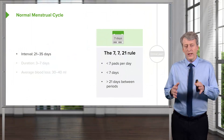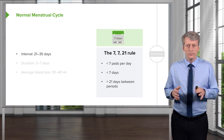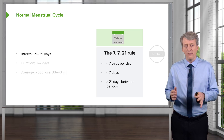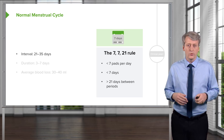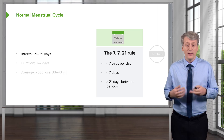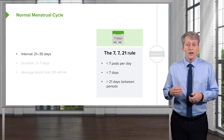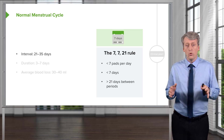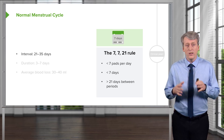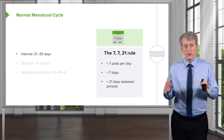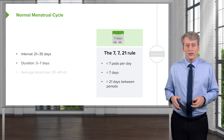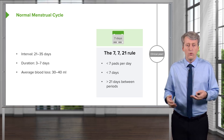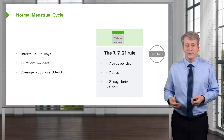Let's remember the 7-7-21 rule. This is the rule we can use quickly to decide whether a patient is having a normal or an abnormal menstrual cycle. Girls should have less than 7 pads per day for less than 7 days, and they should have 21 days or more between periods. The interval should be 21 to 35 days total, the duration should be 3 to 7 days, and the average blood loss is 30 to 40 milliliters or less than 7 pads.